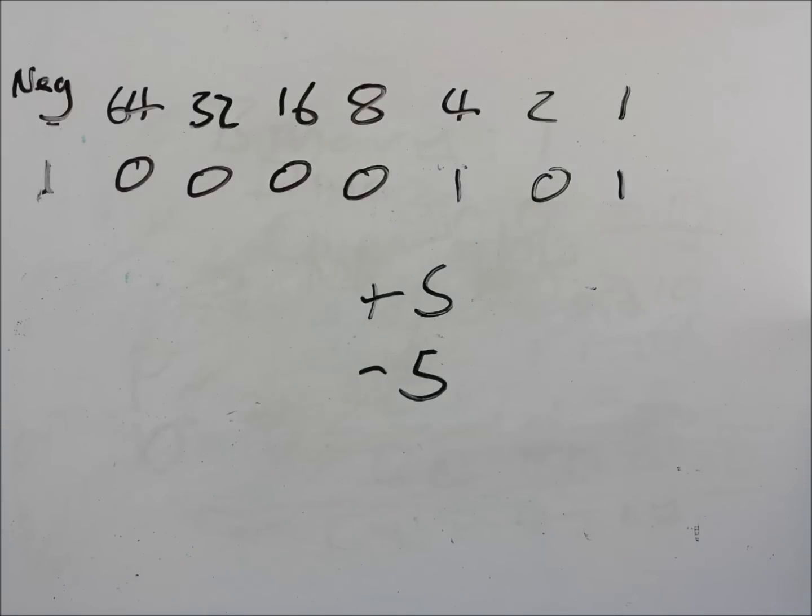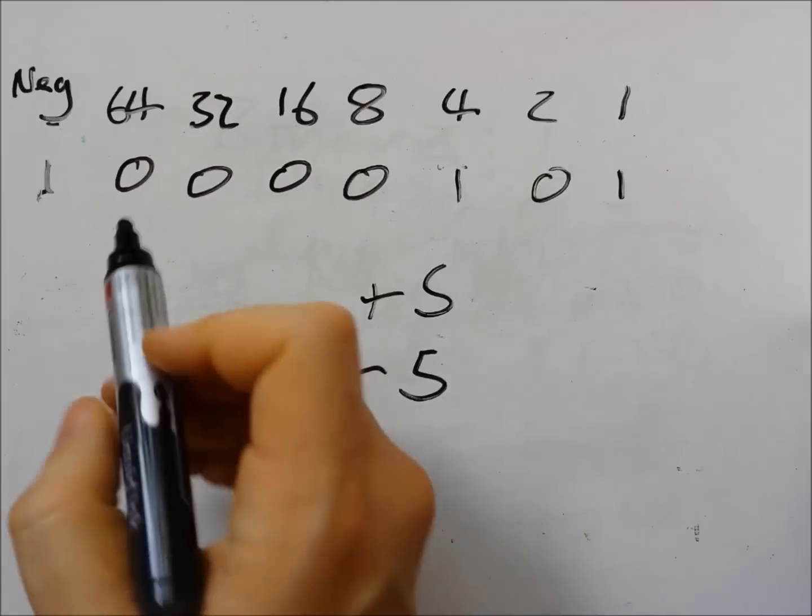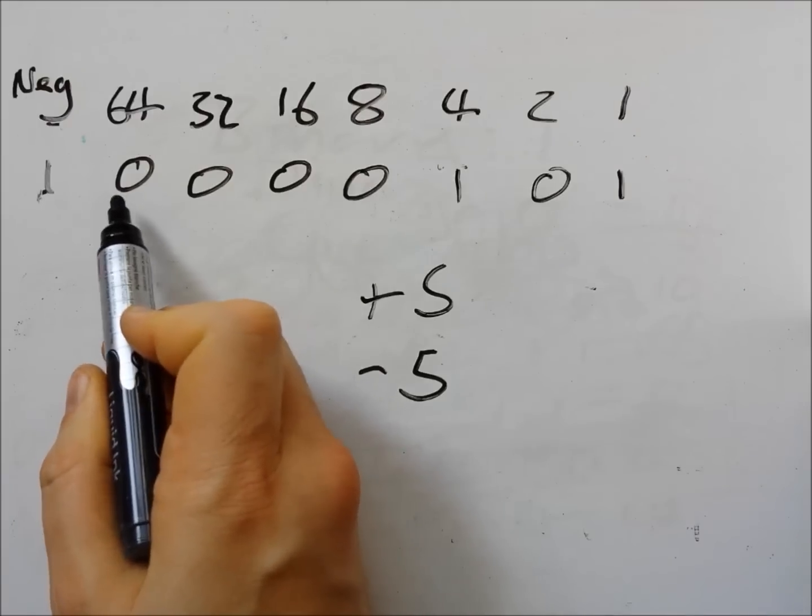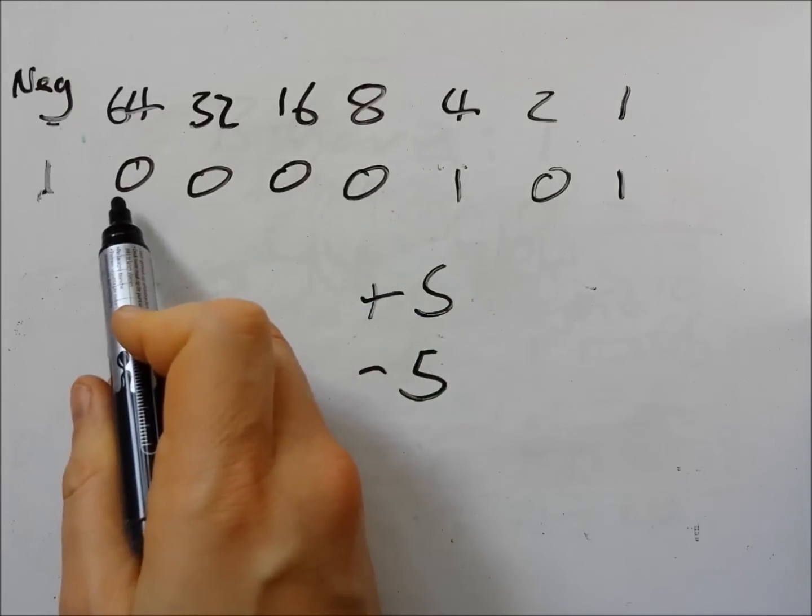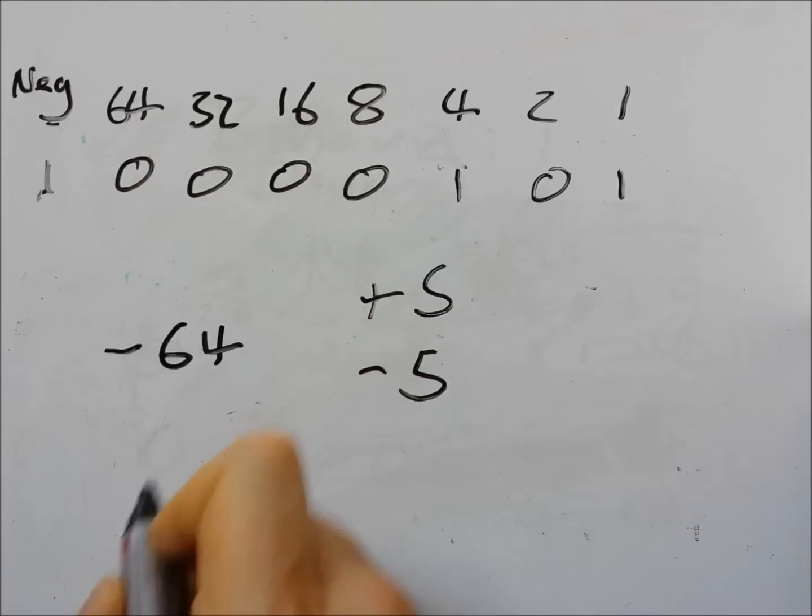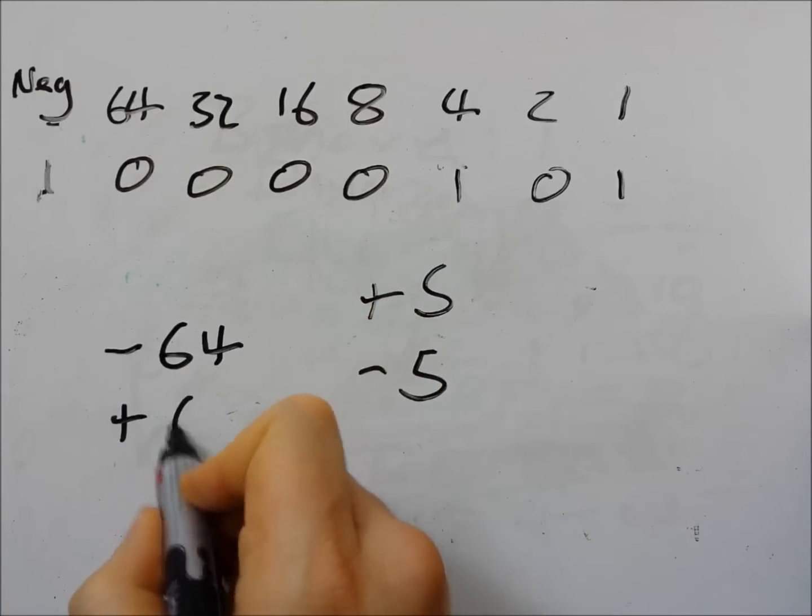There is a slight problem though. It means that we lose a whole range of values. So here we can only represent from minus 64 to plus 64.